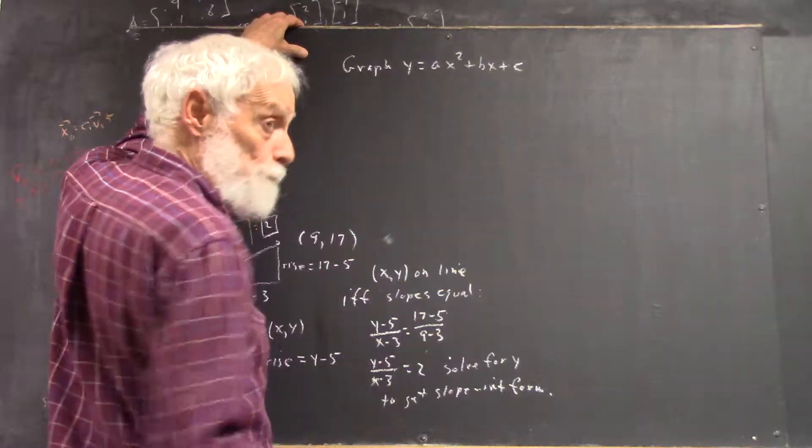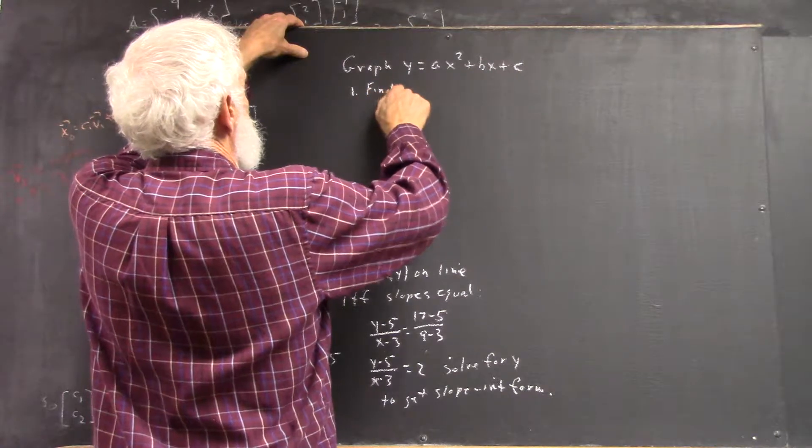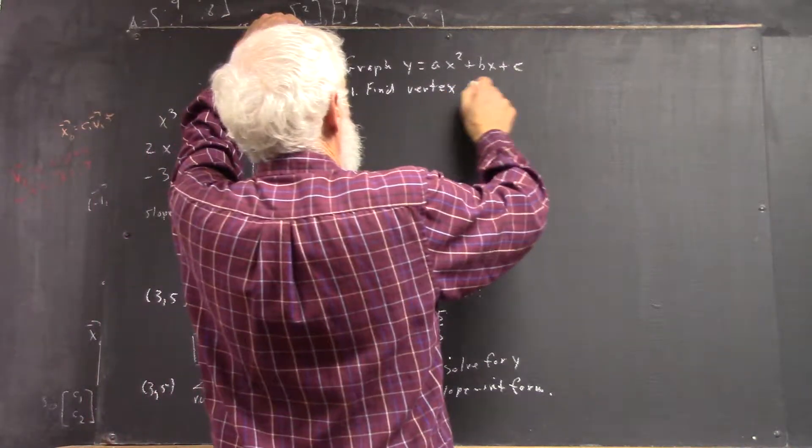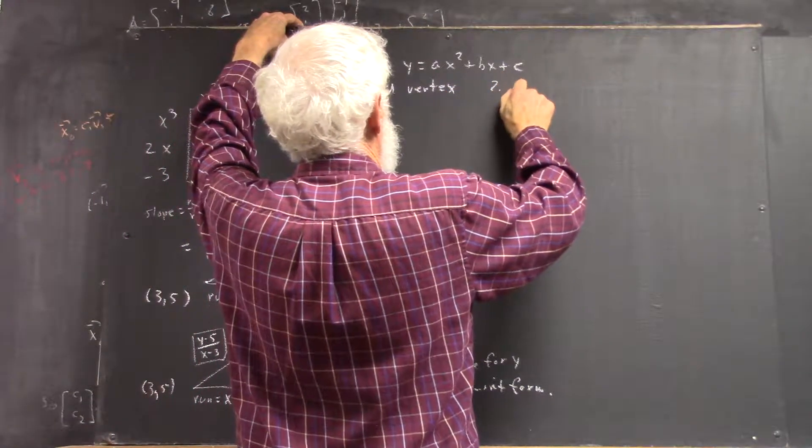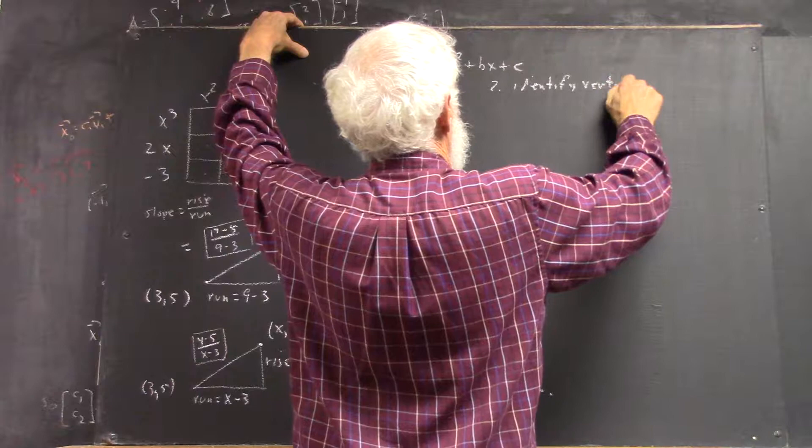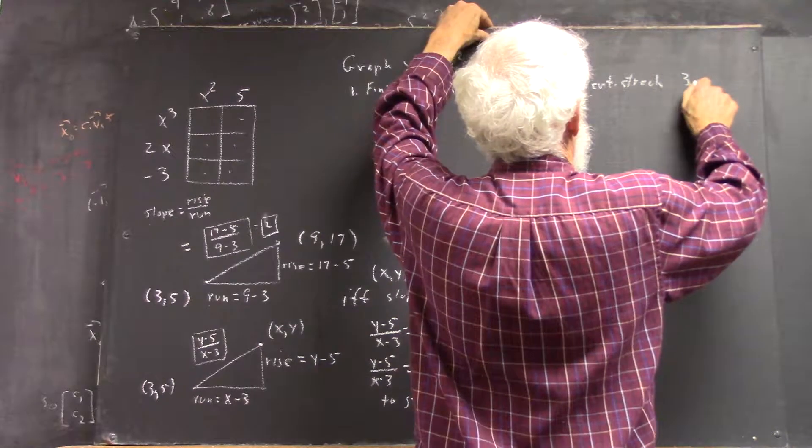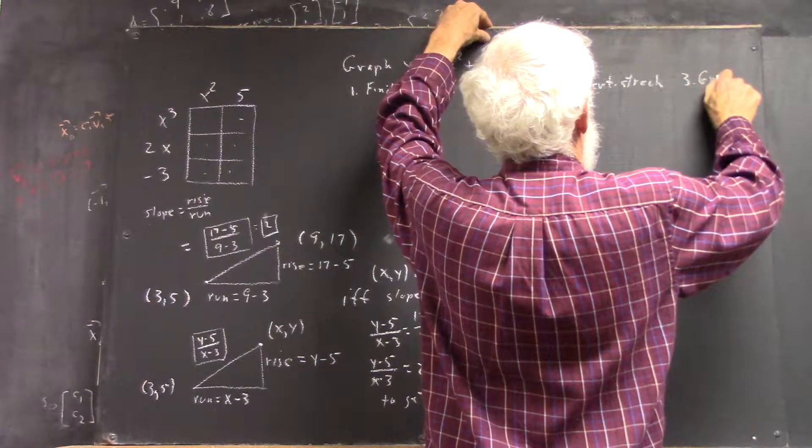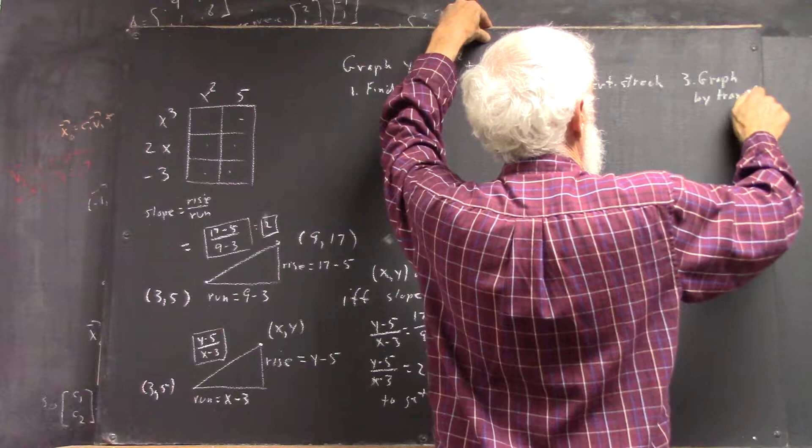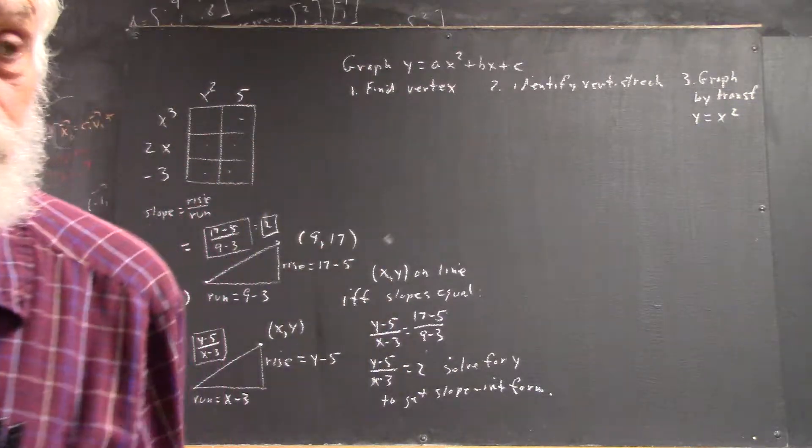So the process is: one, find the vertex to identify the vertical stretch. Three, graph by transforming the y equals x squared graph, right?